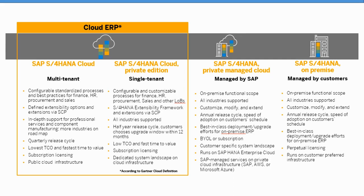So let's look at the private managed cloud. You might wonder what this is — did we not just discuss the private cloud edition? True. But this is another cloud option in which SAP manages the entire infrastructure. You either subscribe to the applications and services, or you bring your own licenses, or BYOL. The private managed cloud resembles the on-premise version in line-of-business scope and industry coverage, sharing more characteristics with its on-prem sibling, such as yearly releases and the ability to customize. It can run on SAP's private cloud infrastructure, also known as HANA Enterprise Cloud or HEC, or AWS or MS Azure.